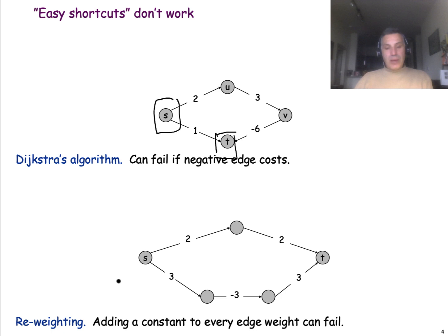Also, as you know by now, just adding a constant in all of the weights of the graph to make them non-negative would also not work. In this case, the minimum cost path is actually the lower path, which has a cost of three instead of a cost of four. However, if we add plus three to all of the weights to make them non-negative, all of a sudden the minimum cost path becomes the upper path, which has a cost of 10 instead of 12.